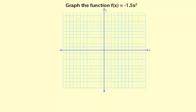Graph the function f(x) = -1.5x². Since we have a quadratic equation, it's going to be a parabola. There's no x term and no constant term, so the vertex has to be at (0, 0).